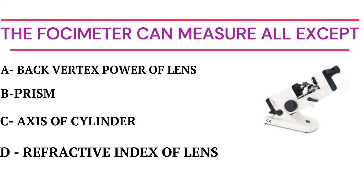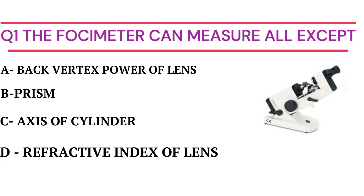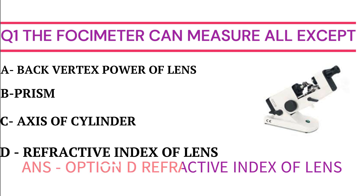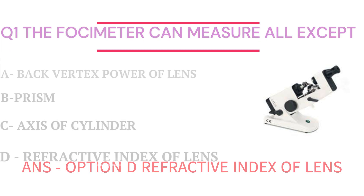The Focimeter can measure all except: Option A - back vertex power of lens, Option B - prism, Option C - axis of cylinder, Option D - refractive index of lens. The answer is Option D: refractive index of lens.